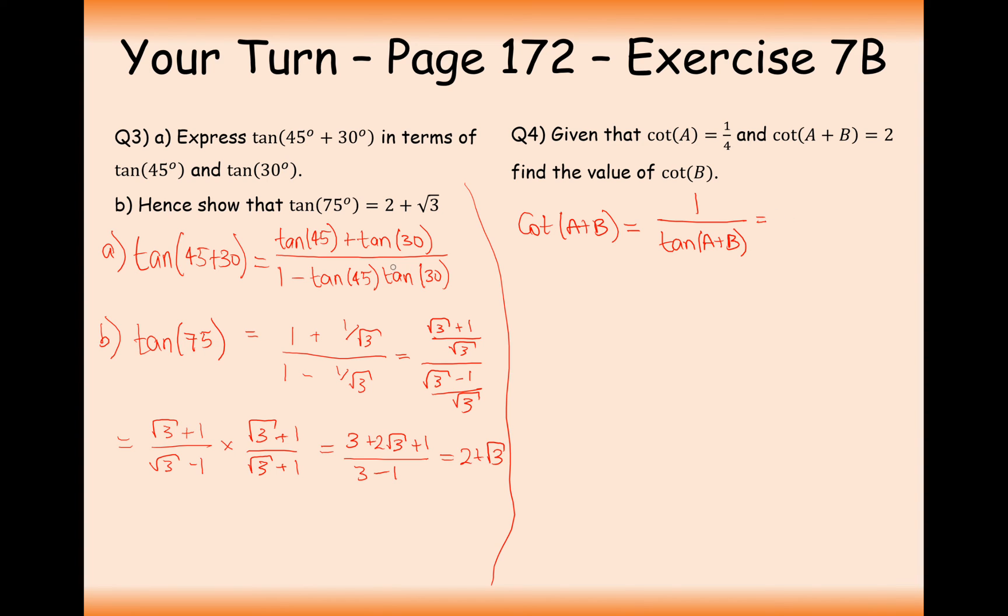So in this case it's going to be this fraction but just twisted upside down. So it's going to be 1 minus tan A tan B all over tan A plus tan B. We'll work in tans and then we'll just leave our final answer as cot equals something.